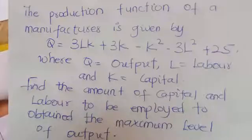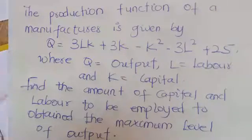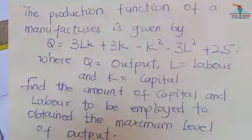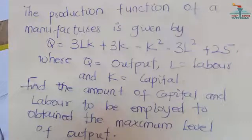We are going to talk about unconstrained optimization. What do we mean by unconstrained optimization? This is under a production function. You are going to find the maximum output when we have some changes in the input variables, without the producer facing any constraints — that is, facing any difficulties in producing that quantity of goods.